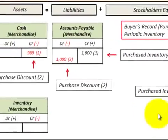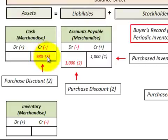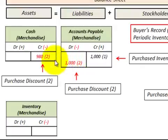The purchase discount is a contra account to purchases, reducing our expense from $1,000 to $980. The balancing entry goes to cash — we decrease cash by $980. So we originally had a bill of $1,000, took a 2% purchase discount, and ended up paying $980 in cash.